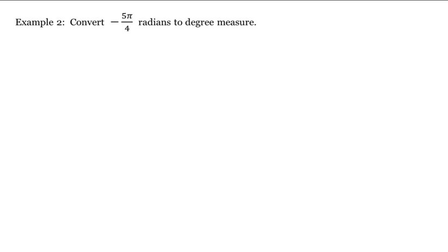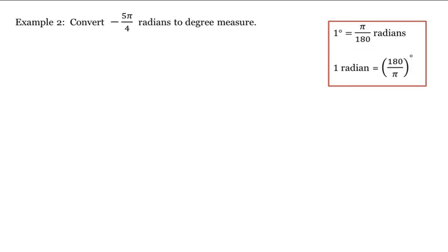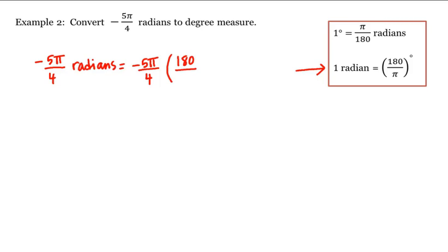Let's convert negative five pi divided by four radians to degree measure. Since we're going from radians to degrees, we'll use the second conversion formula: negative five pi over four times 180 divided by pi degrees. The pi's cancel, and four goes into 180 forty-five times. Therefore this equals negative five times 45, which is negative 225 degrees.